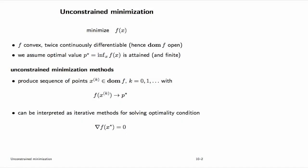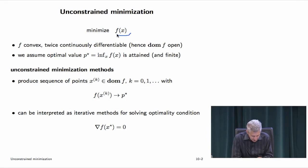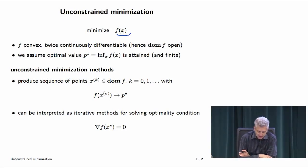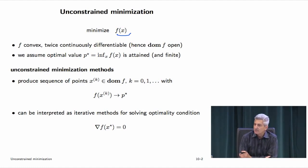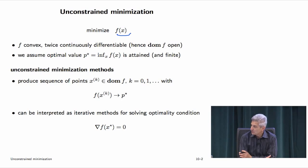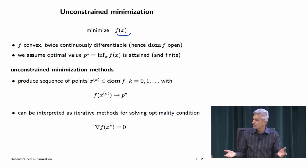So we're going to look at smooth unconstrained minimization. We're going to minimize an objective function f, assumed to be convex and twice continuously differentiable, so its domain is open. We assume the optimal value is attained — the only other option is that it's minus infinity, unbounded below. All the methods we look at will do the right thing when it's unbounded below, but we'll assume we're in the case where it's bounded below and attained.